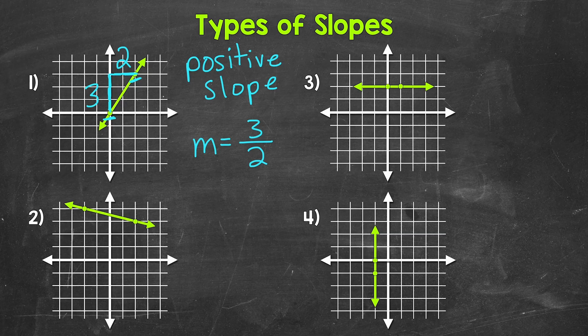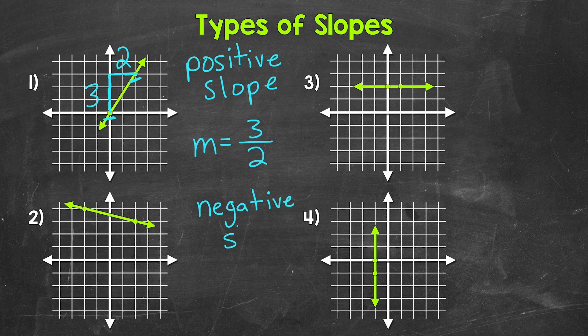Moving on to number two, we have a line moving downward as it's moving from left to right. So there is negative vertical change from left to right. This line is moving downward — the Y values are decreasing as the X values are increasing. This is an example of a negative slope.